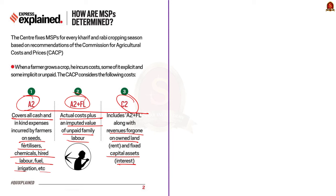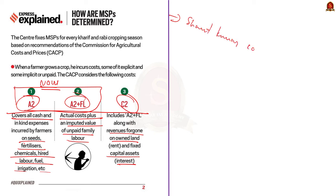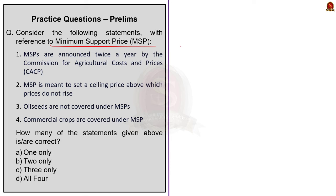All three cost types are calculated by CACP, but the recommended MSP is presently based on A2 plus FL cost only. It is important to note that the government doesn't buy all crops at MSP — actual procurement depends on the crop and location. The Shanta Kumar committee's 2015 report revealed that only 6% of MSP was actually received by farmers. Currently, MSPs are not backed by law and farmers cannot demand MSP as a right.